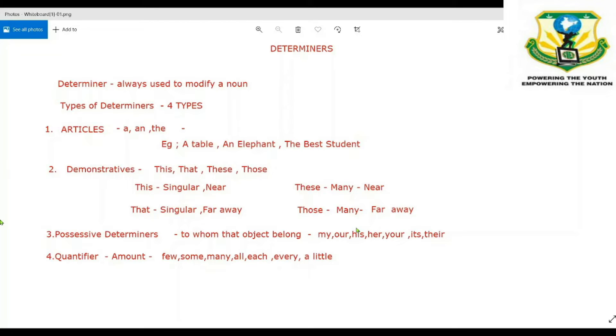This is used for a singular object which is near to you. For example, this pen is one pen which is near to you, and I say this is my pen. When I keep this pen away from me, I will say that is my pen. Now you got the difference—this and that both are used for singular objects. Only the distance of the object matters.